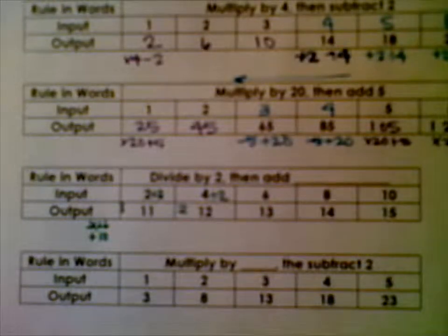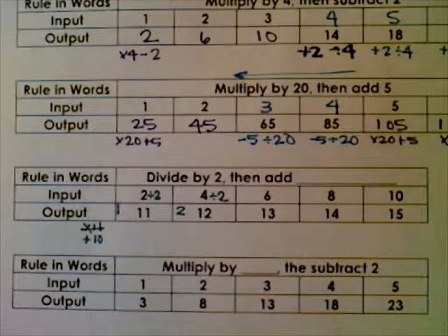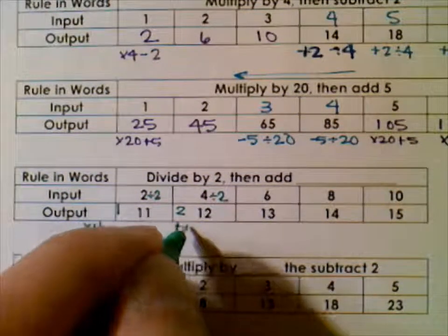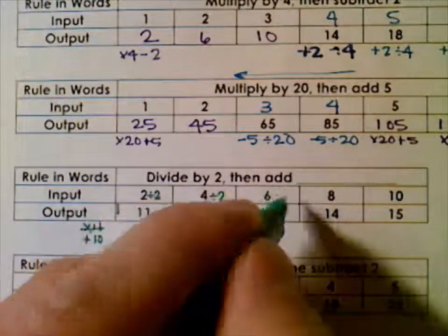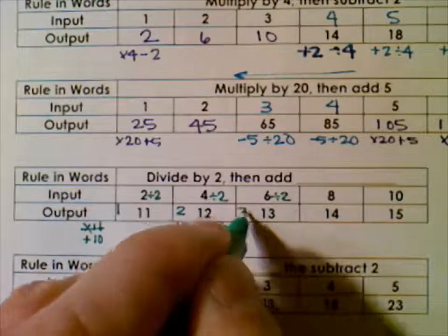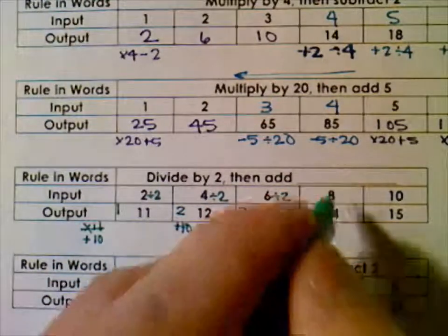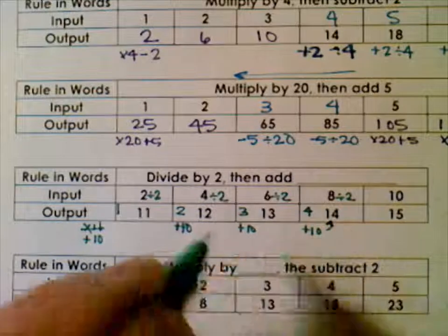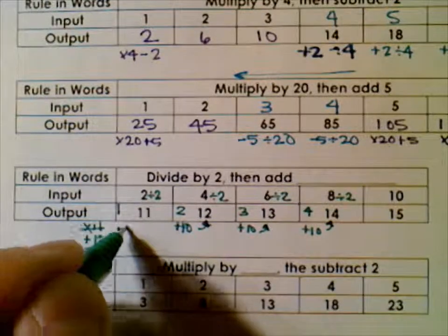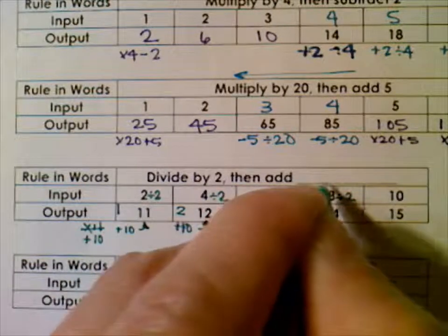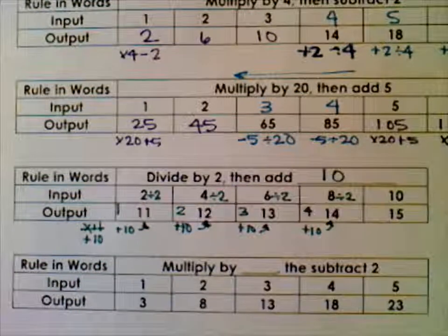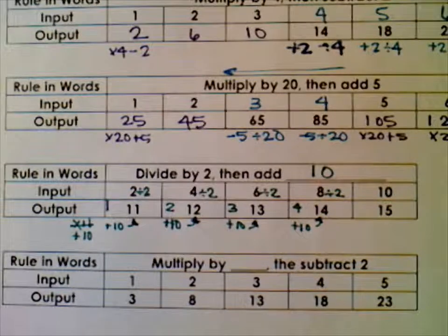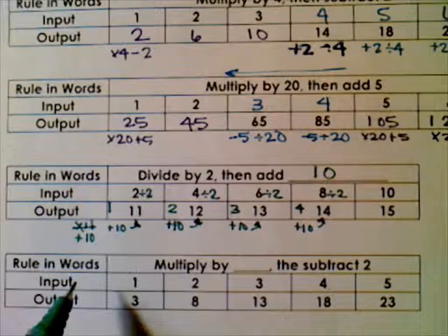Let's verify: input 6, divided by 2 is 3, add 10 gives 13. Input 8, divided by 2 is 4, add 10 gives 14. So the rule is confirmed: divide by 2, then add 10.